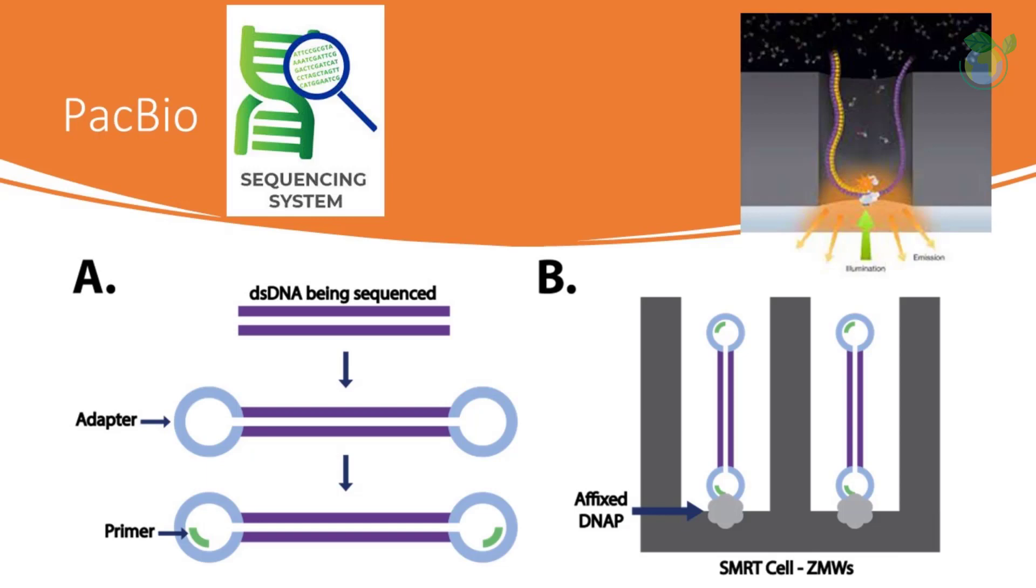SMRT sequencing has several advantages, one of which is its ability to produce long reads, tens of thousands of bases long, in a single read. These long reads make it possible to span large structural variants and challenging repetitive regions that are difficult to assemble with short read sequences.